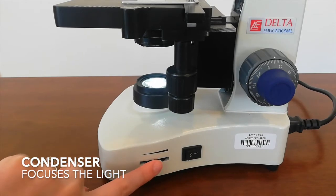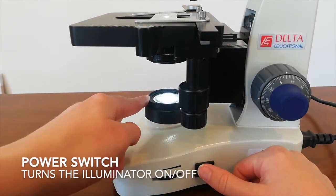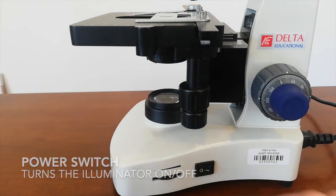This is the condenser, which controls the amount of light. This here is the power switch that turns the microscope on and off.